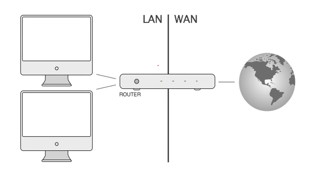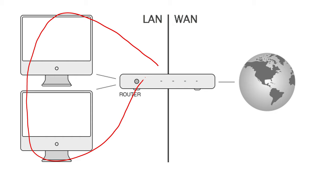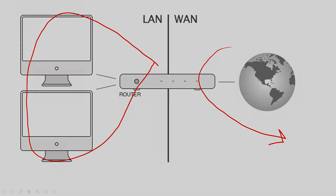To summarize: Wi-Fi is internal, just for the small local network, while the WAN is the wider connection to the internet service providers. Thanks for watching.